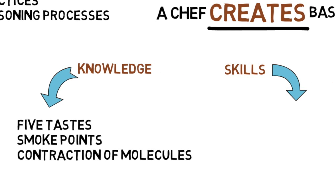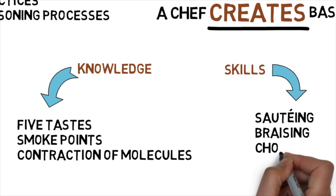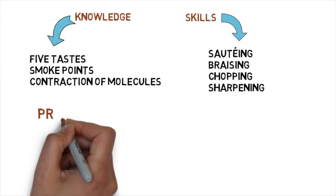Specific skills need to be mastered, such as sauteing, braising, chopping the onion I mentioned above, and even sharpening knives.